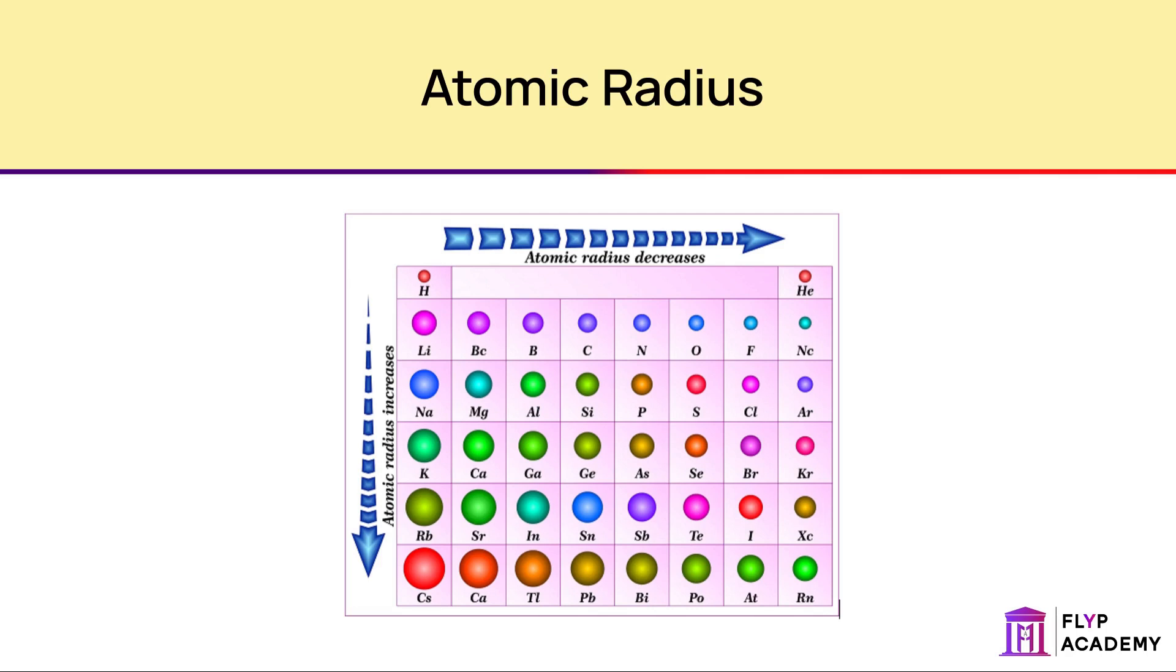Group 7 elements are the halogens. They are all non-metal elements, apart from At, and the series includes F, Cl, Br, I and At.